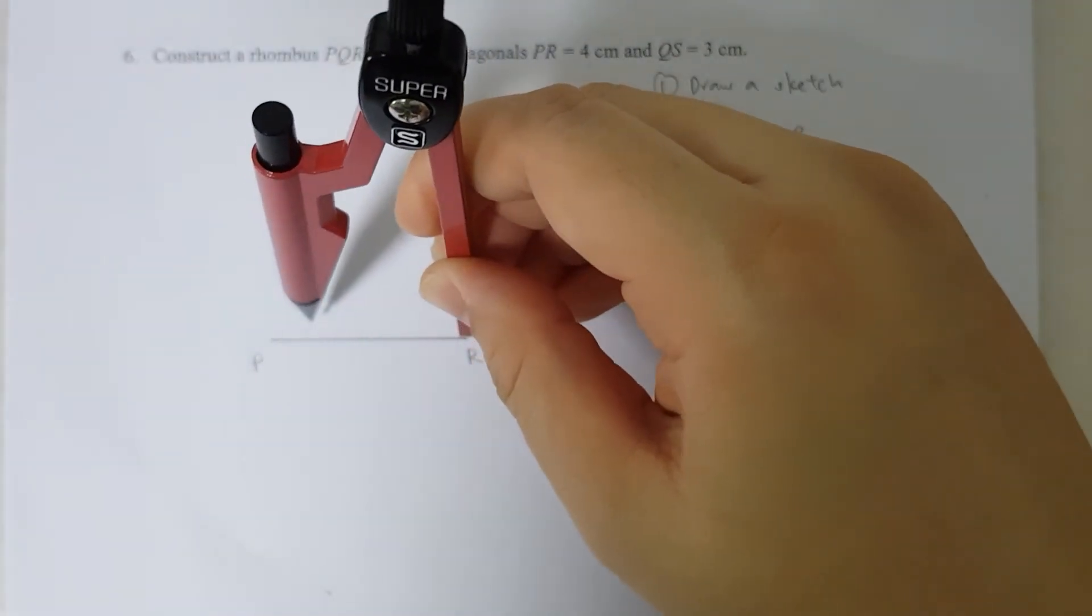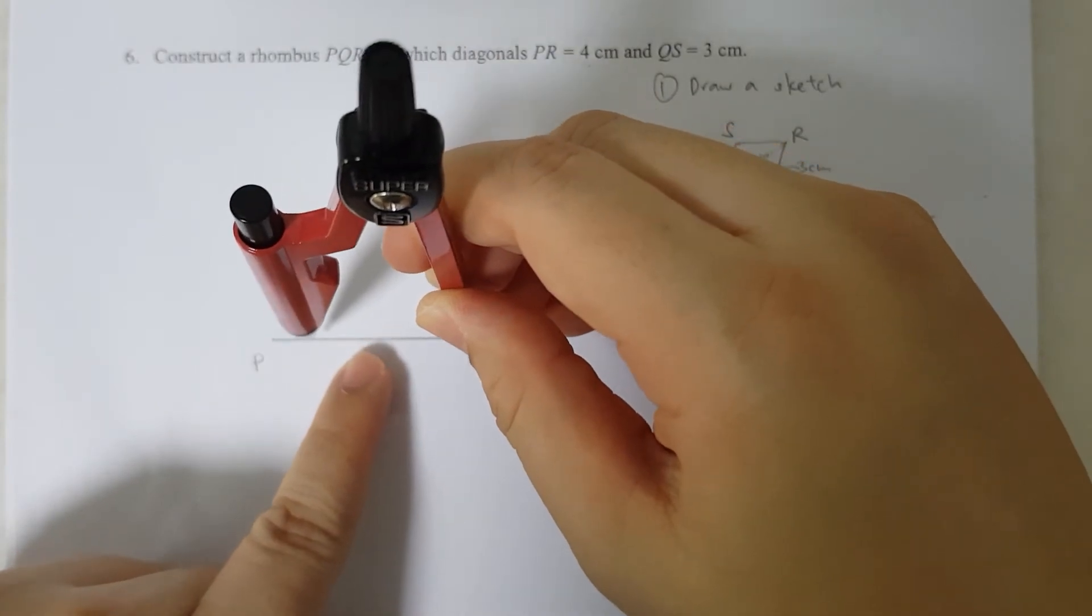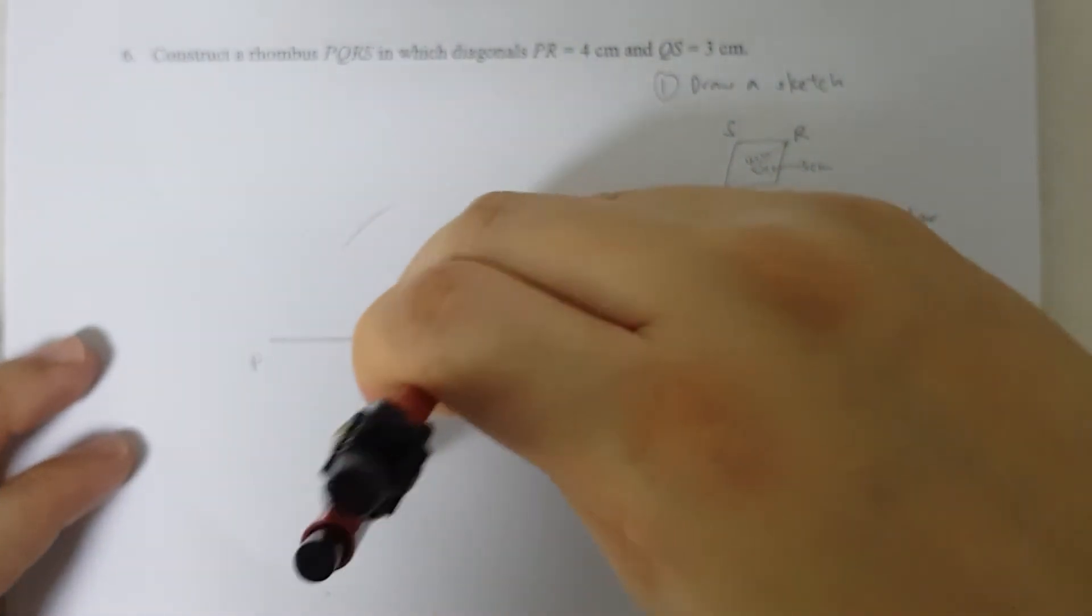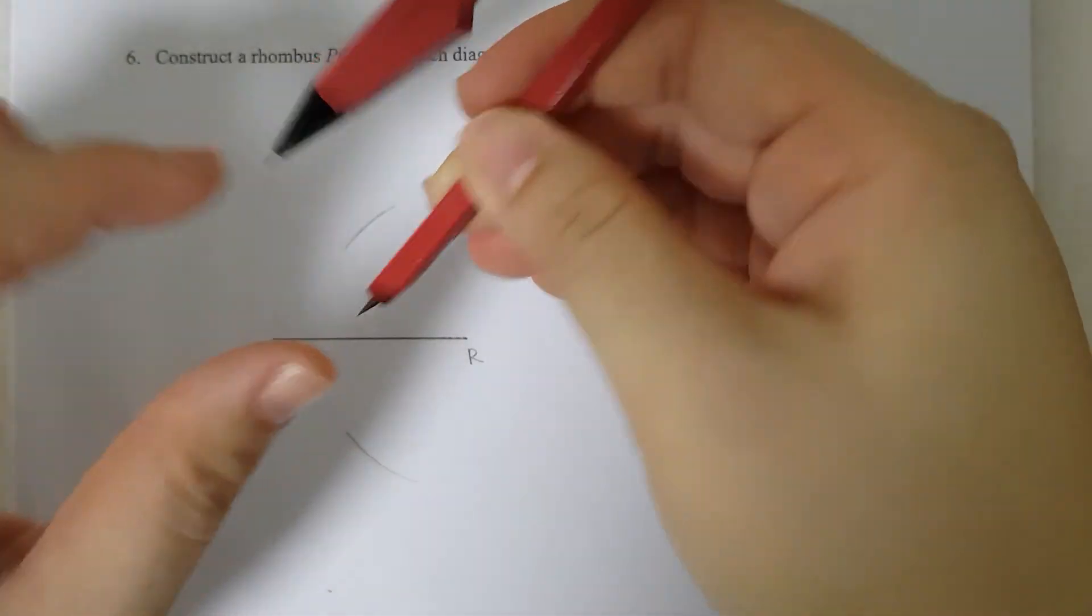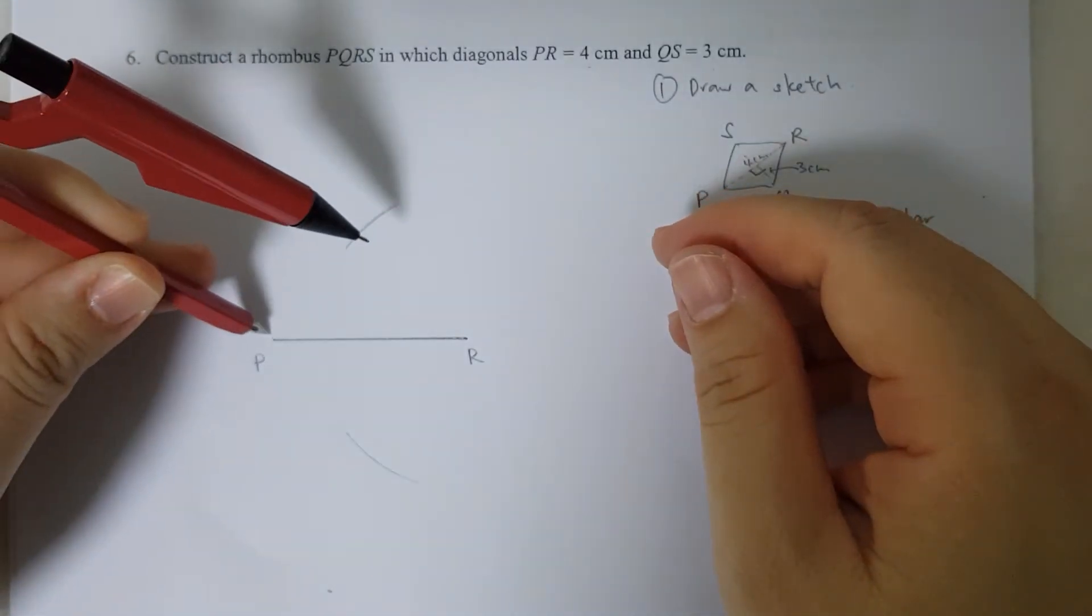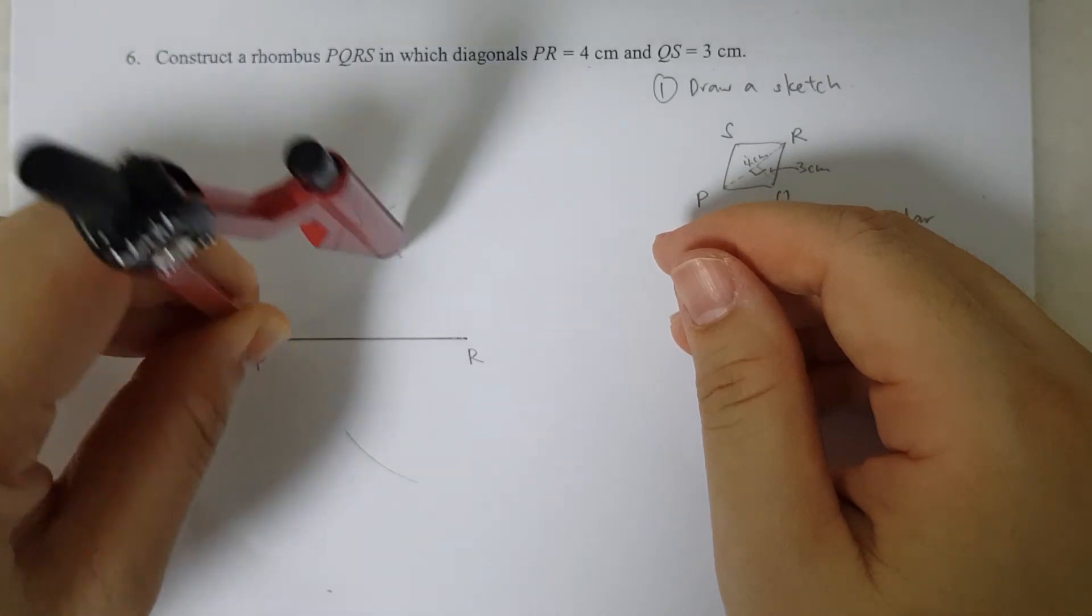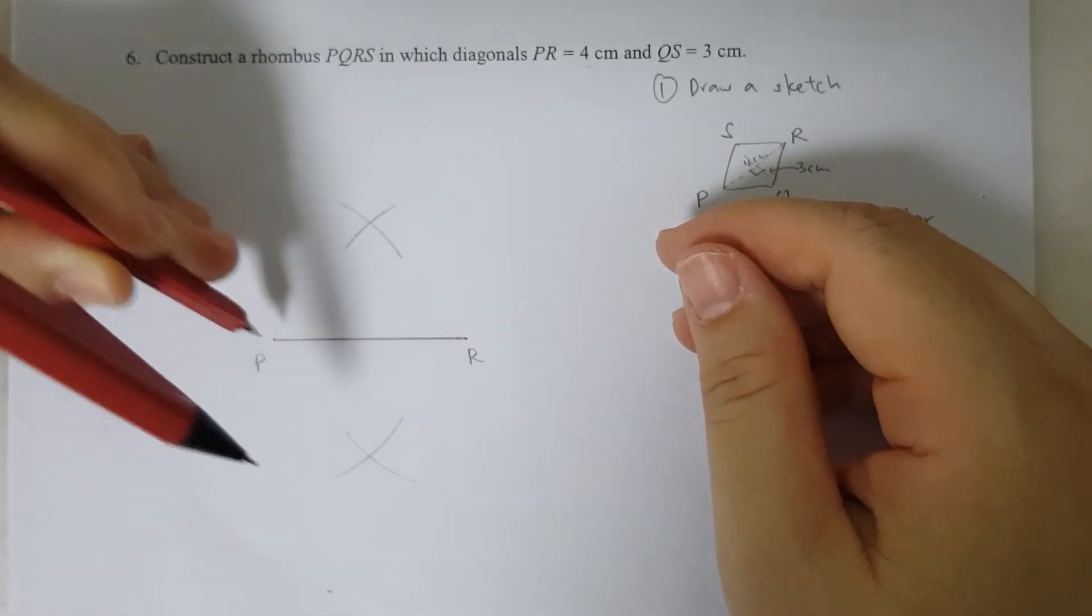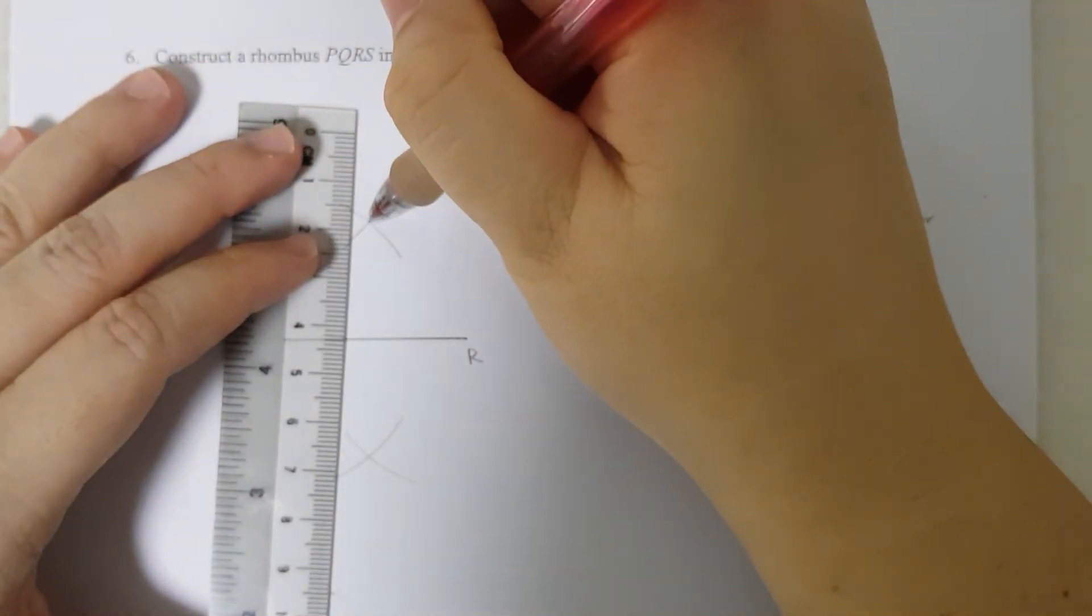I have to open my compass to more than half of it, about three-quarters. Drawing arcs above and below the line, then with the same compass width I'll put the tip at P and draw arcs above and below the line.